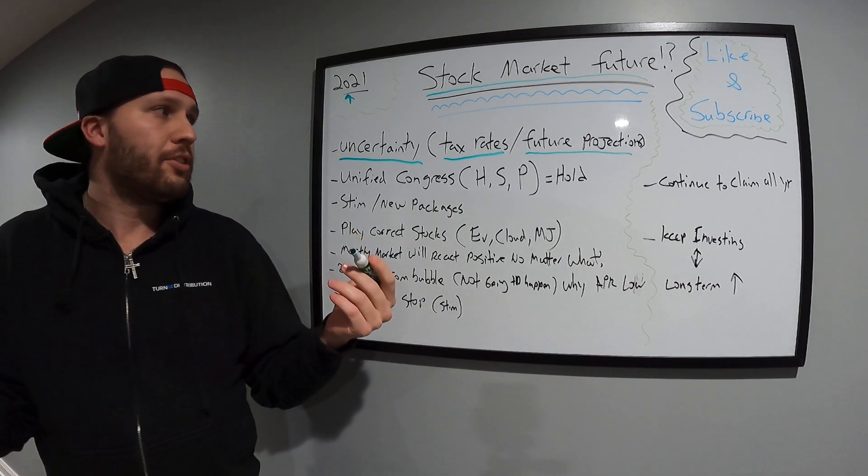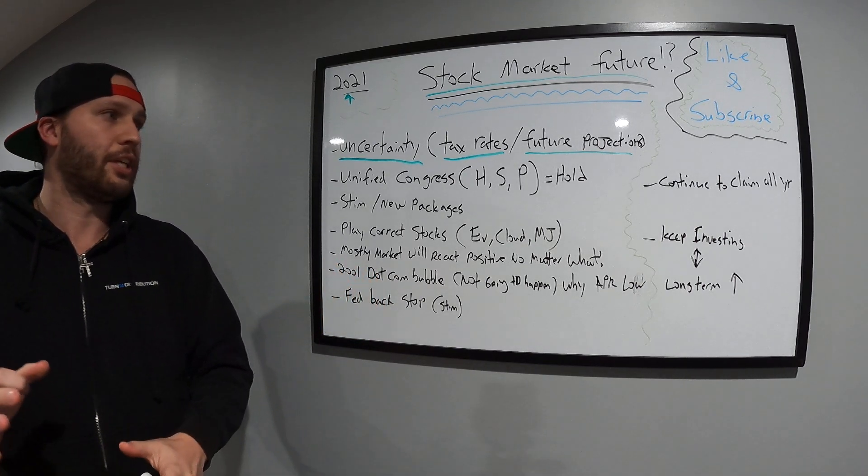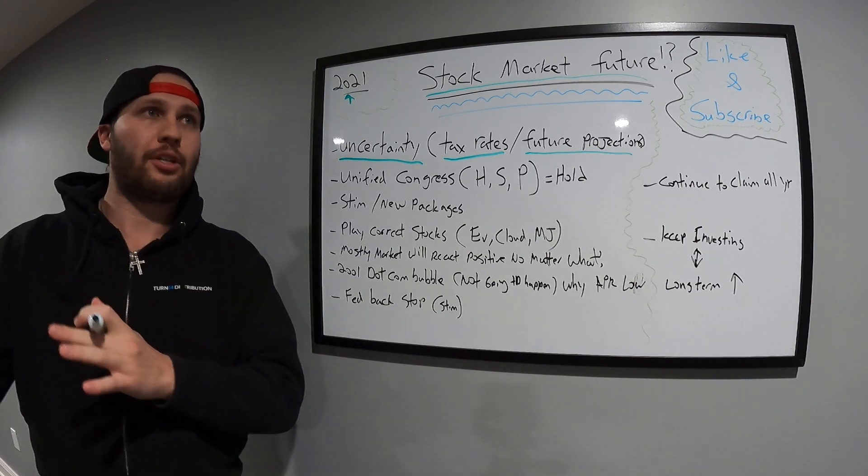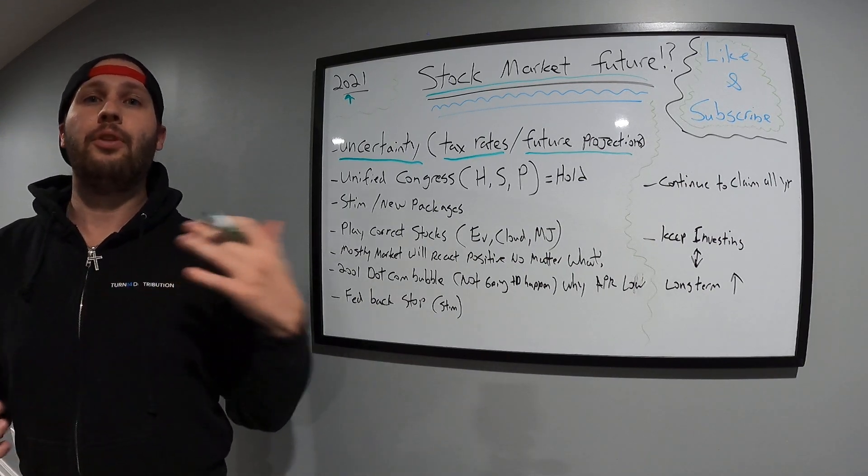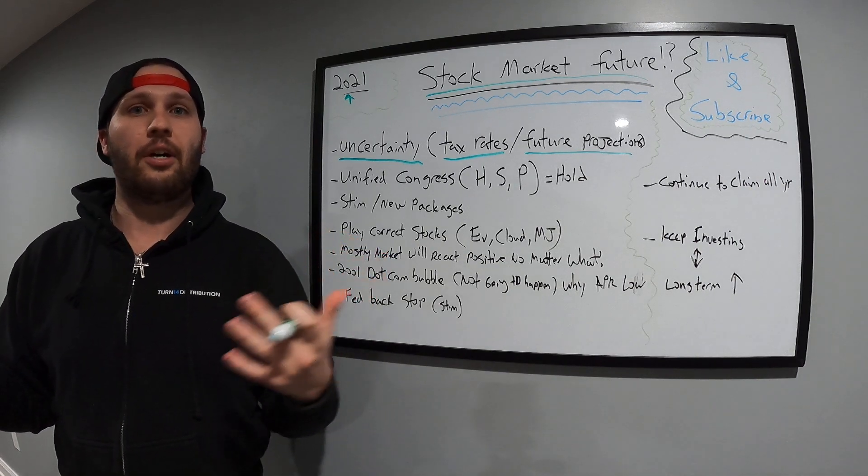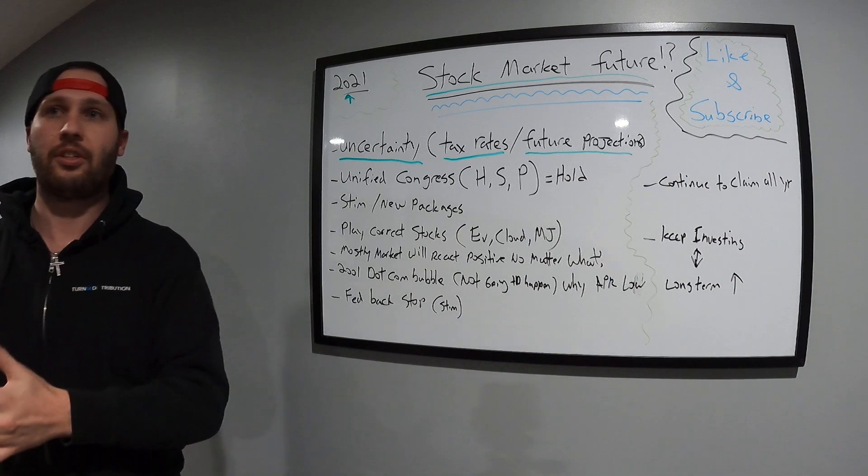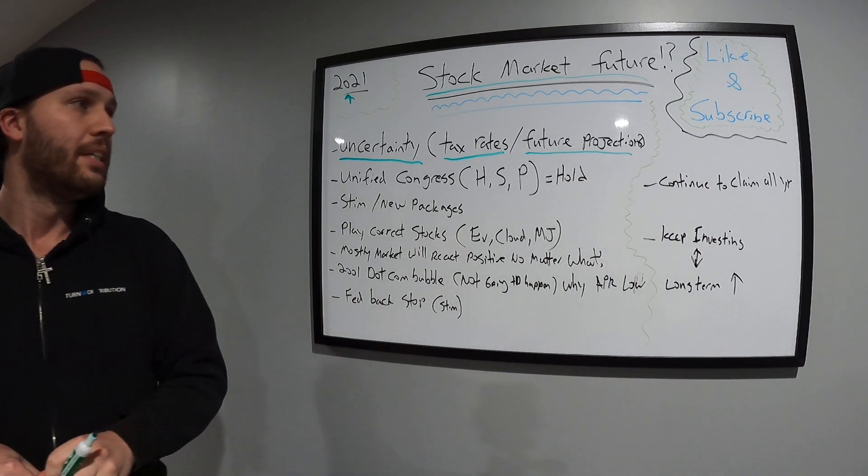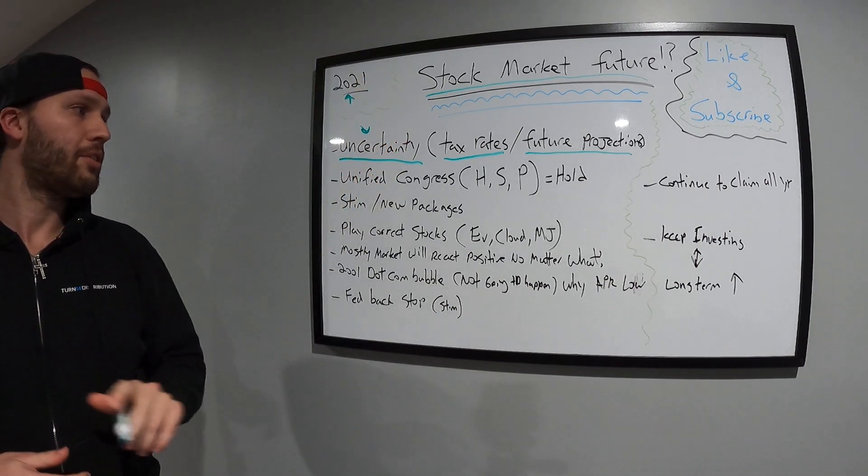Now that everybody knows what's going on, the market has certainty. We know what's going on. We know that most likely tax over a high threshold are going to get taxed more. Corporate tax is going to be higher. But now that we all know that, we can kind of project exactly where people can put their money in places where they think it's going to grow and they understand where it's going to be now. I think we have more certainty, but there was uncertainty before all this.